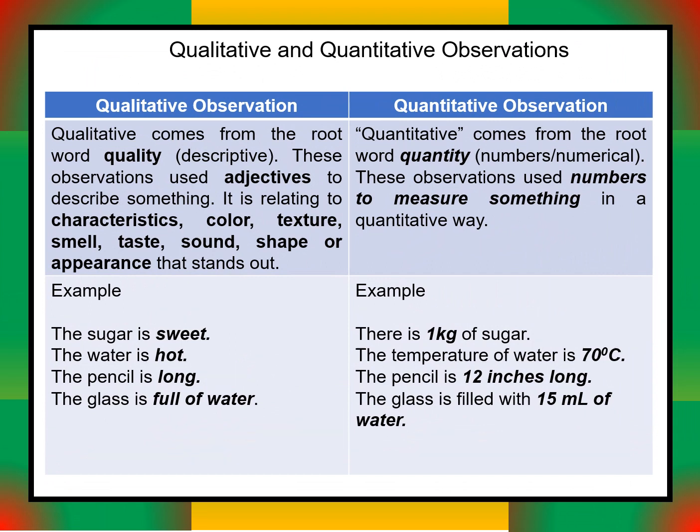There are two types of observations: qualitative and quantitative. Qualitative observation is descriptive — it uses subjective adjectives to describe characteristics such as color, texture, smell, taste, sound, shape, or appearance. For example: the sugar is sweet, the water is hot, the pencil is long, the glass is full of water.